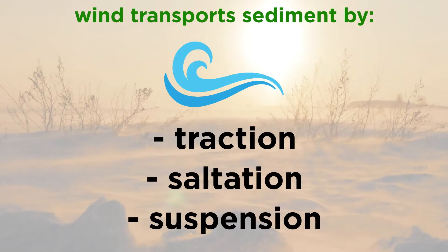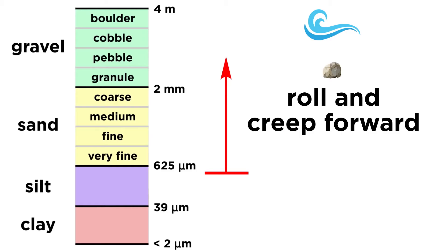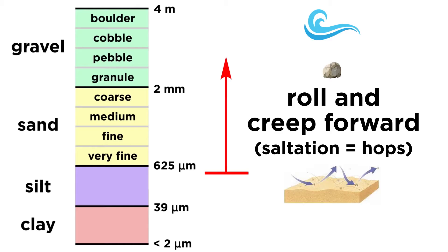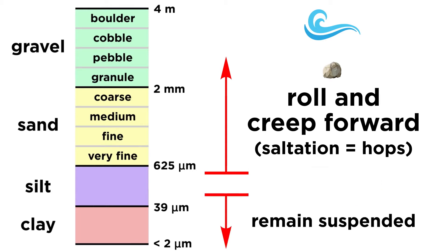Just like with fluvial environments, sediment can be transported by traction, saltation, and suspension. Sediments larger than 500 microns are rolled along the ground and slowly creep forward. Sand-sized sediments move in a series of short hops called saltation that knocks off small silt-sized particles into the wind. Very small sediments, less than 70 microns, are either suspended in the air for short distances or remain in suspension.